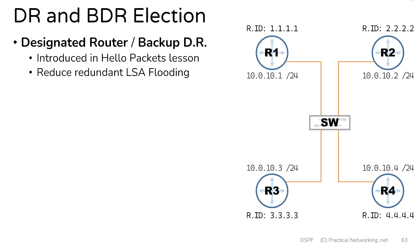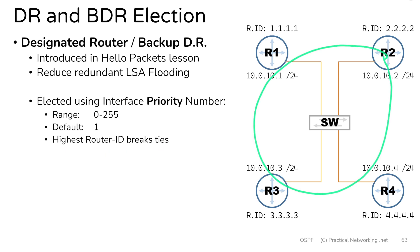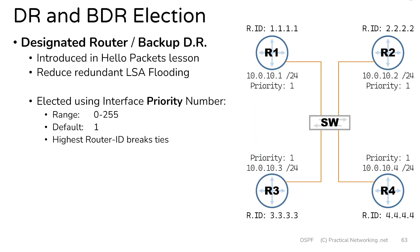We told you that a DR and BDR are elected using a priority number. A priority number is assigned to every interface, defaults to 1, but can be anything in the range of 0 to 255. And if there's a tie, the router ID is going to break the tie. So in this topology, if all routers are using the default priority of 1, router 4 would become the DR since it has the highest router ID of 4.4.4.4, and router 3 would become the BDR since it has the next highest router ID.